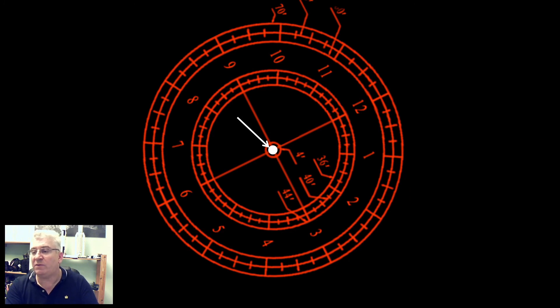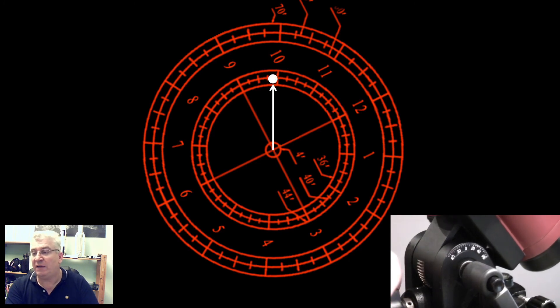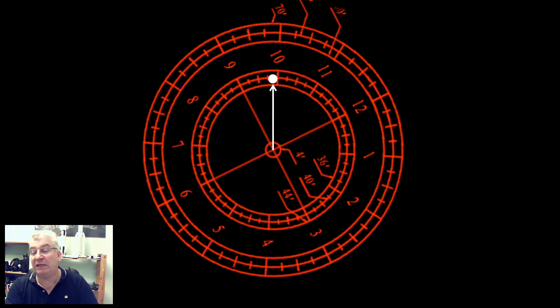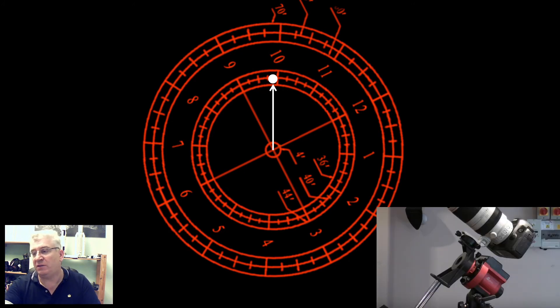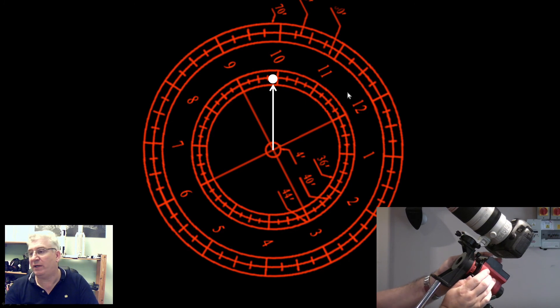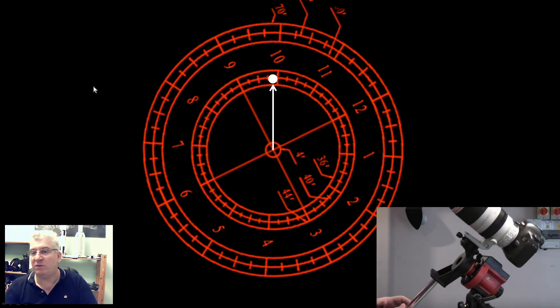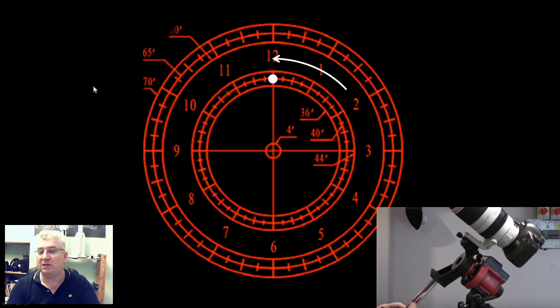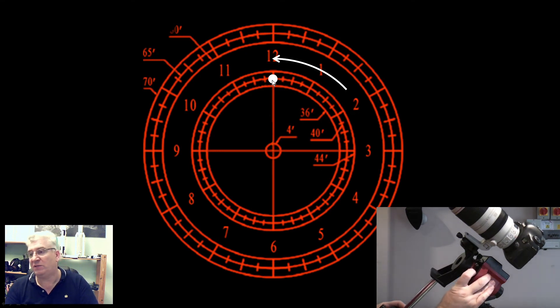Then what we do is using the altitude bolt only is to lift Polaris up until it's on these inner rings. Once it's on the inner rings, we then rotate the RA of the mount so that the 12 o'clock point, this point here, comes around and coincides with where Polaris is. After the rotation, we've now got Polaris at the top of the 12 o'clock.